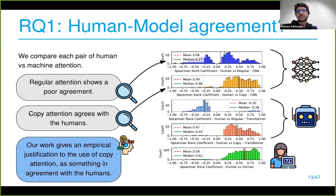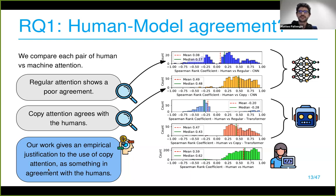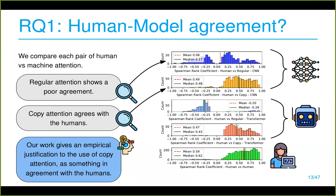By finding that copy attention agrees with humans, we sort of justify the use of this copy attention mechanism as something useful both for the task and as something that aligns with how humans reason on code — an empirical justification.